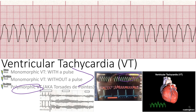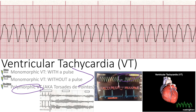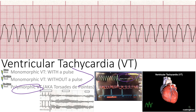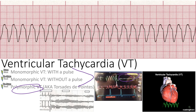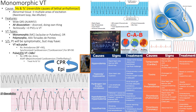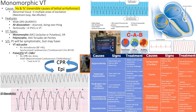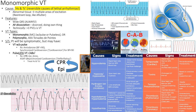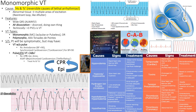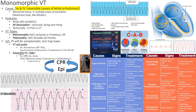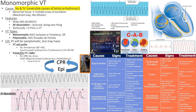If the patient has a pulse, you hit the sync button to provide synchronized cardioversion. Regarding voltage, modern machines allow a lower starting voltage — around 120 joules — whereas 20 years ago you started at 360 joules and used paddles. Now they use pads and can start at lower joules.